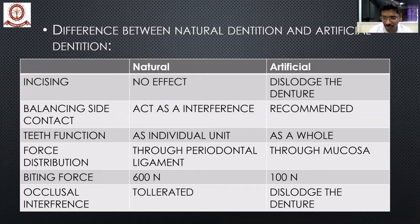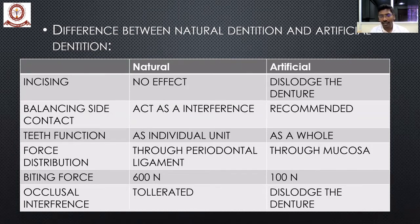Now we'll look at the differences between natural dentition and artificial dentition — meaning complete dentures, not fixed partial dentures. In natural dentition, incising does not have any significant effect. However, in a complete denture patient, when the patient tries to chew with the front teeth, a leverage force comes into action and it will dislodge the posterior aspect of the denture, causing it to come down. That is the problem with artificial dentition.